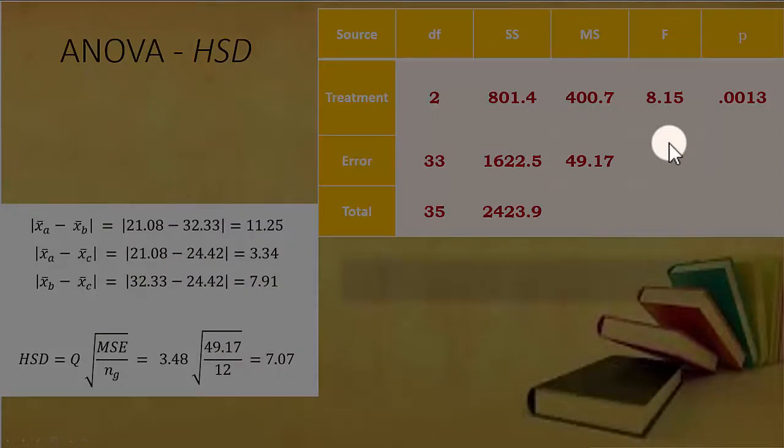Now to get to the honestly significant difference analysis, the first thing we'll do is take the absolute value of differences between each pair of sample means. In the previous video we calculated the mean for group C to be 24.42, and the mean for group A was 21.08 and the mean for group B was 32.33.